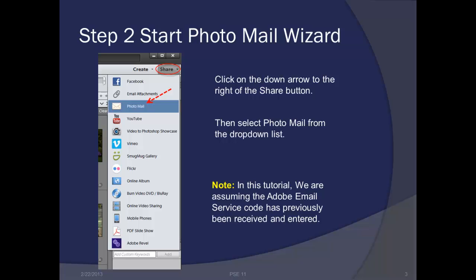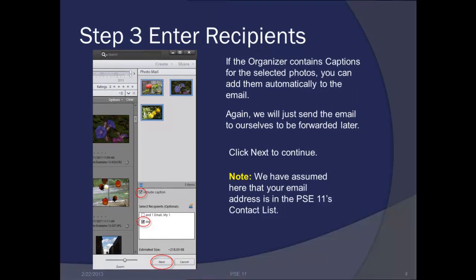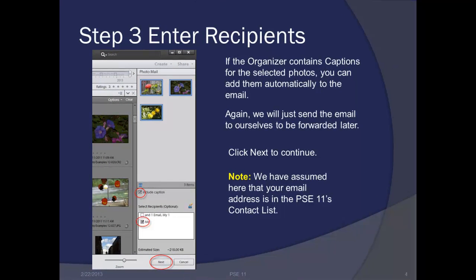In this tutorial, we are assuming the Adobe email service code has previously been received and entered. We get a very similar screen as we saw when we were just emailing photos as attachments. If the organizer contains captions for the selected photos, you can add them automatically to the email, as shown by the check mark about mid-screen.